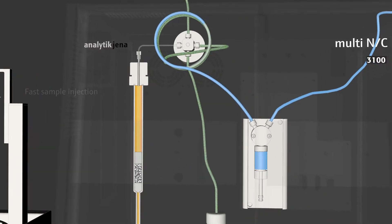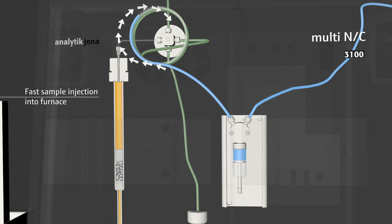A robust ceramic valve guarantees optimum particle handling. The sample is injected quickly and all particles are completely transferred from the injection loop to the furnace.